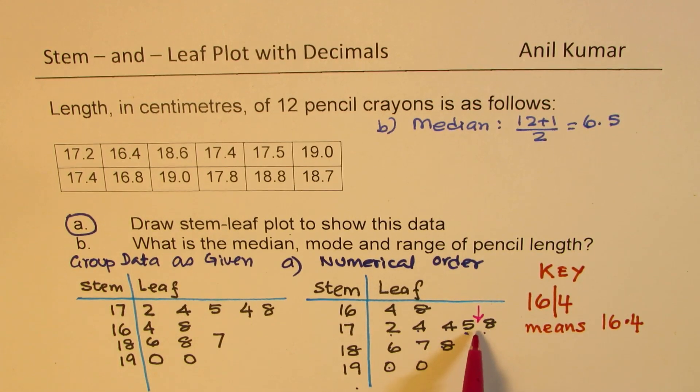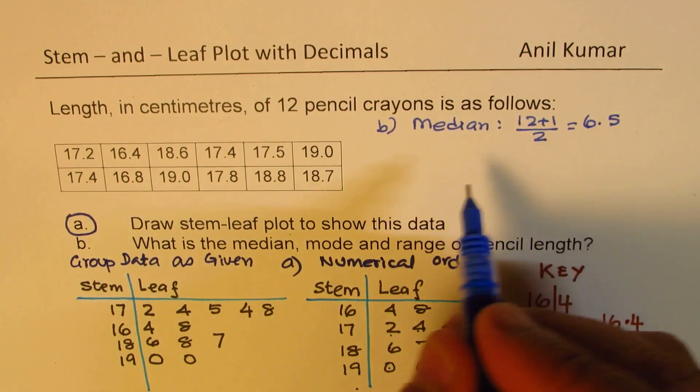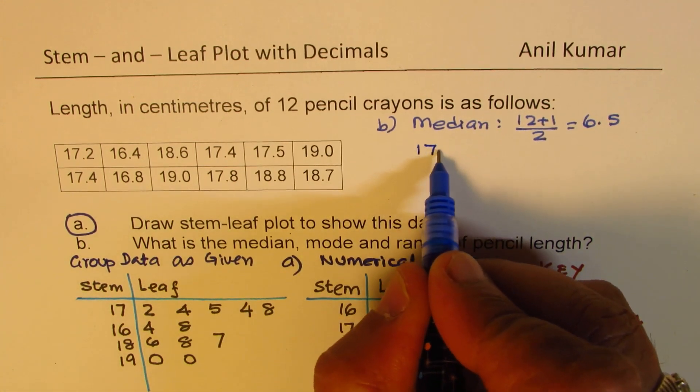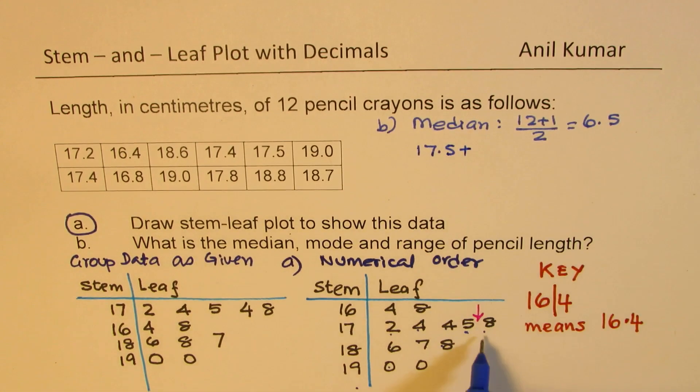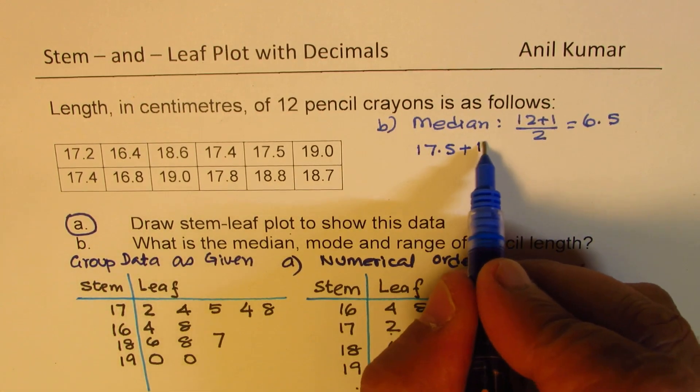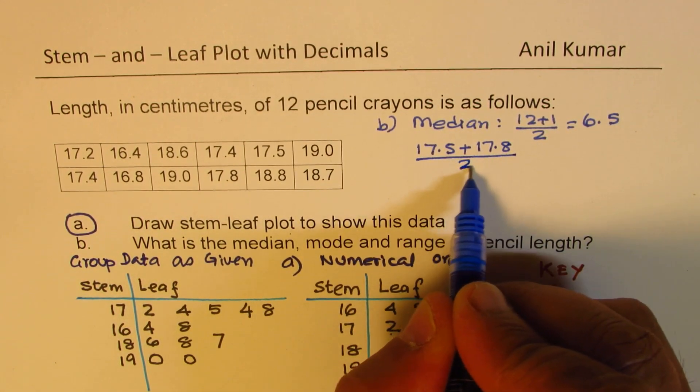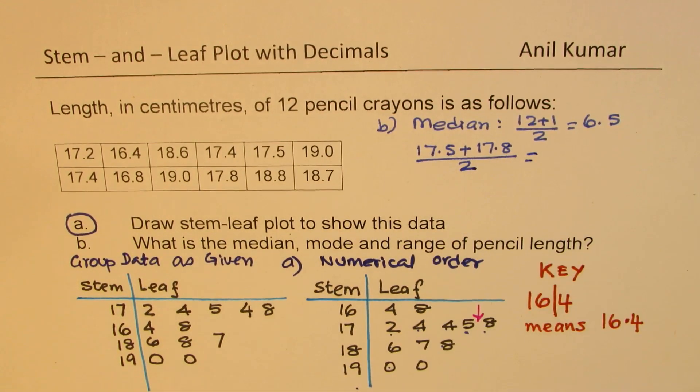We are looking for something 6.5 means after 6 position and before 7 position. So to get the value we will add them and divide by 2. So we have this position. The values are 17.5 plus 17.8, and then we are going to divide this by 2.